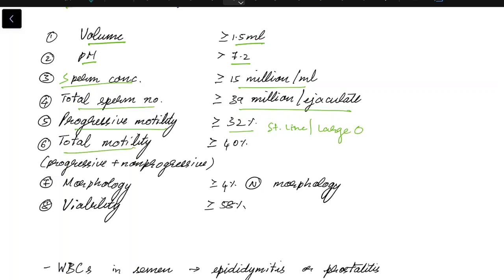The total motility should be greater than or equal to 40 percent. Total motility includes progressive motility and non-progressive motility. Non-progressive motility means the motility of sperm in small or tight circles.